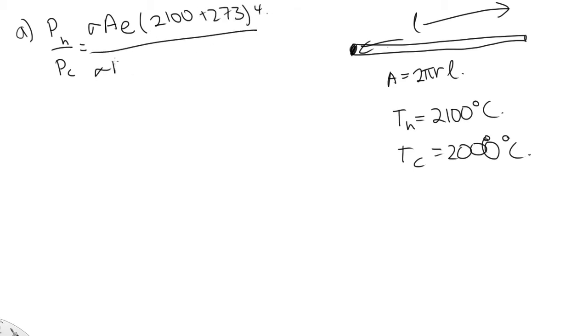over σAE(2000 + 273)^4. These are all common factors, so they cancel out. So solving this on the calculator, we end up with 1.19.